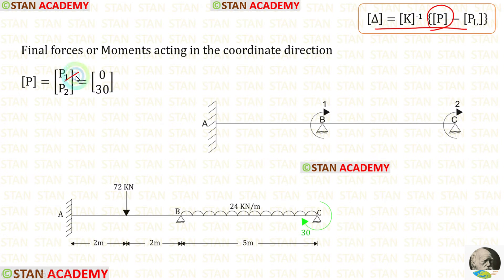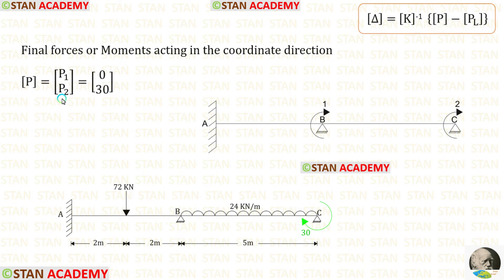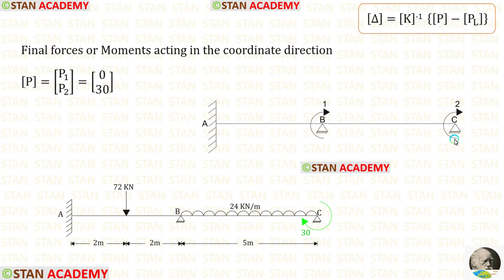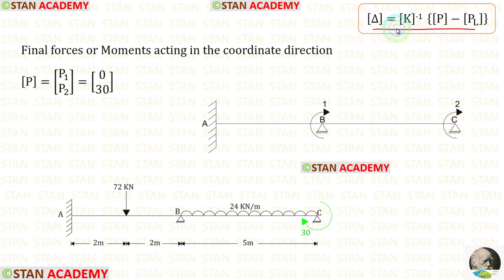Now let us find the P matrix. For P1, the first coordinate has no applied moment, so P1 equals 0. For P2, the second coordinate has a moment of 30. Since we kept our coordinate in the clockwise direction and the moment is also acting in the clockwise direction, we apply it as positive. Now we are going to find the stiffness matrix.